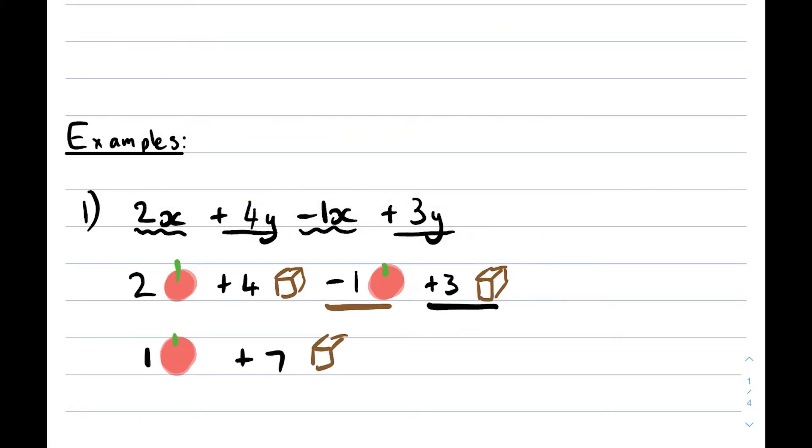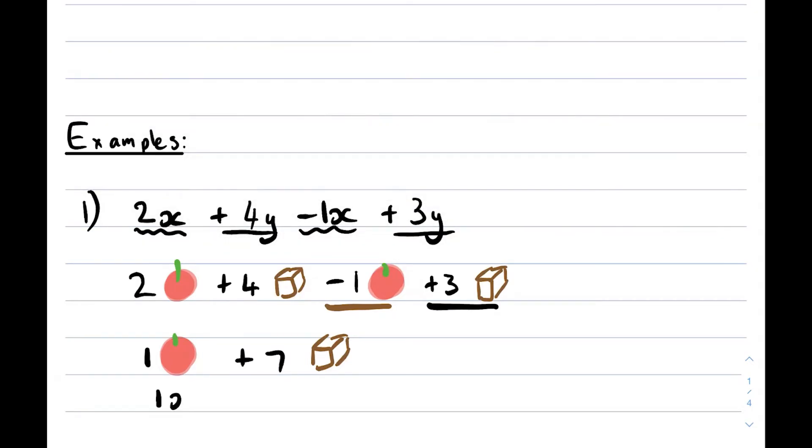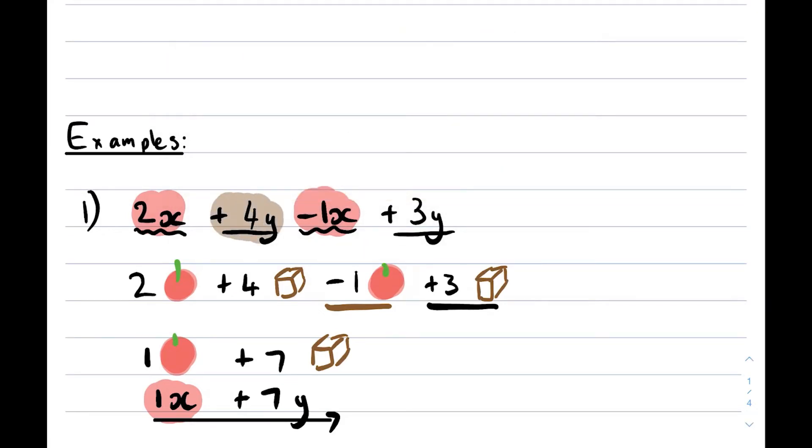But we didn't start with boxes. We actually started with the variable. So you're just going to resubstitute that. So you have 1x + 7y, and then that is your answer. You're not going to be drawing pictures every single time, but this is what you need to see. What you can do is you can say 2x - 1x, that's how you get to the 1x. And then you have 4y and you're adding 3 more y's, and that's how you get to your 7y. So you don't need to draw pictures. Maybe you can just underline them like I did or highlight them, or just think of them as objects.